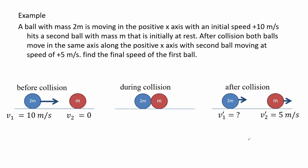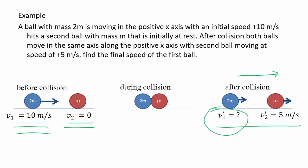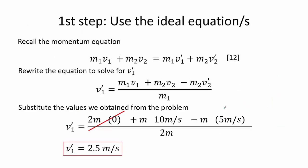Here is an example of elastic collision. A ball of mass 2m moving in the positive x-direction at 10 m/s hits a second ball of mass m initially at rest. After the collision both balls move along the positive x-axis, with the second ball at 5 m/s. Using conservation of momentum and solving for V1', we find the final speed of the first ball is 2.5 m/s.